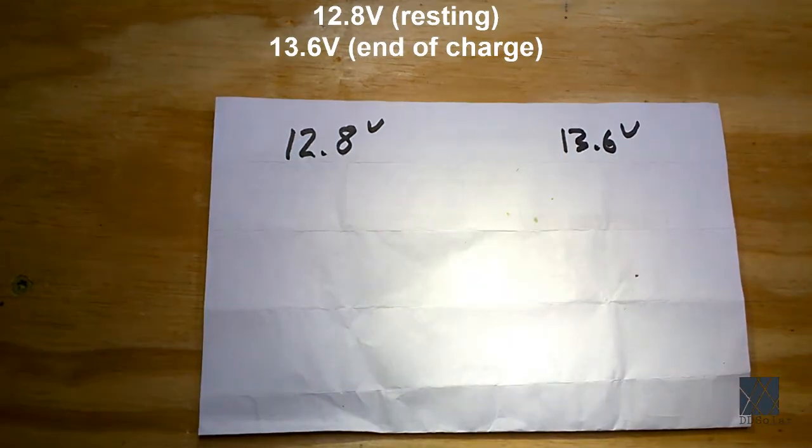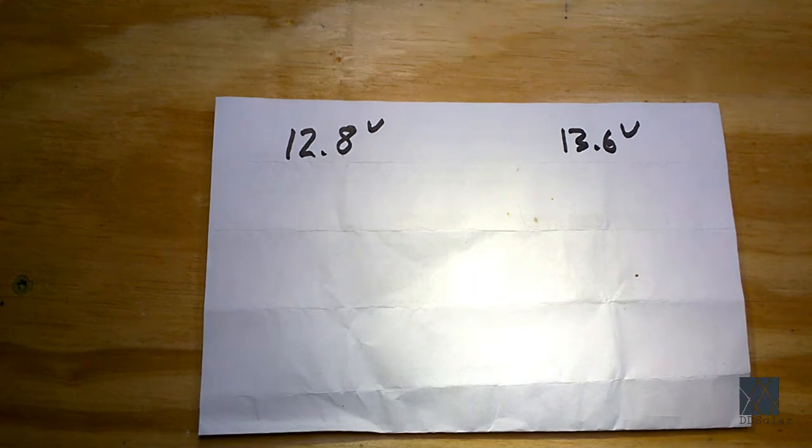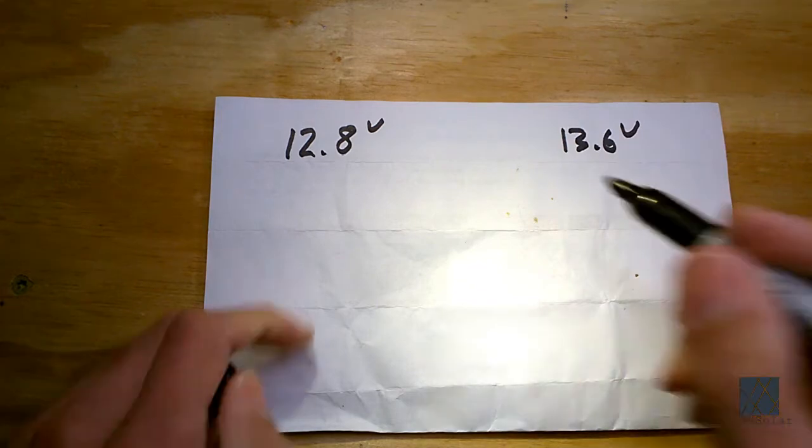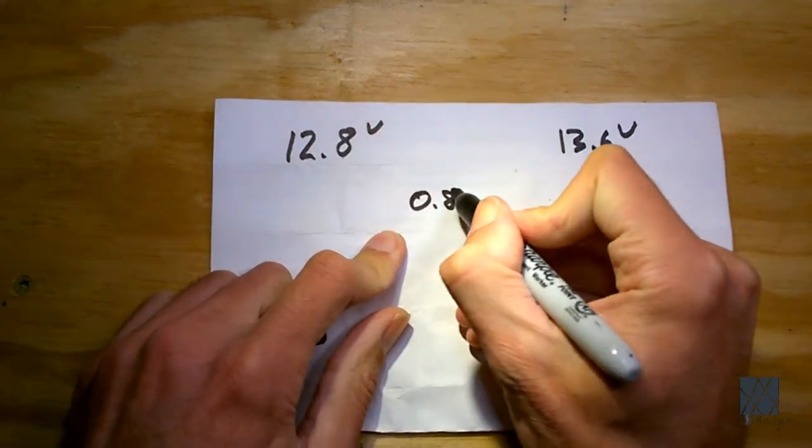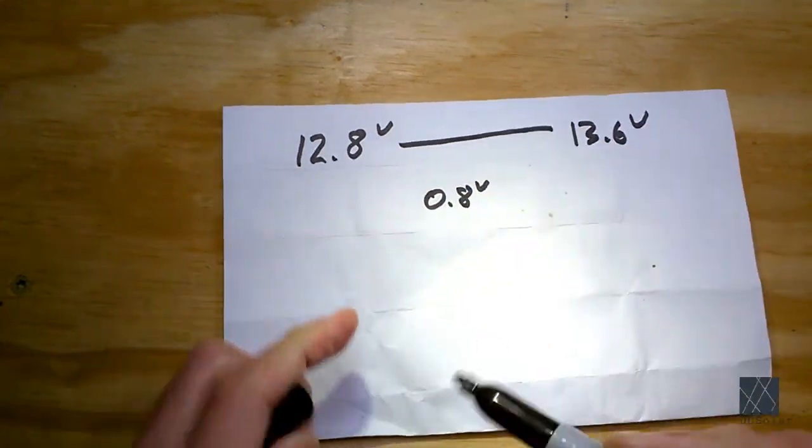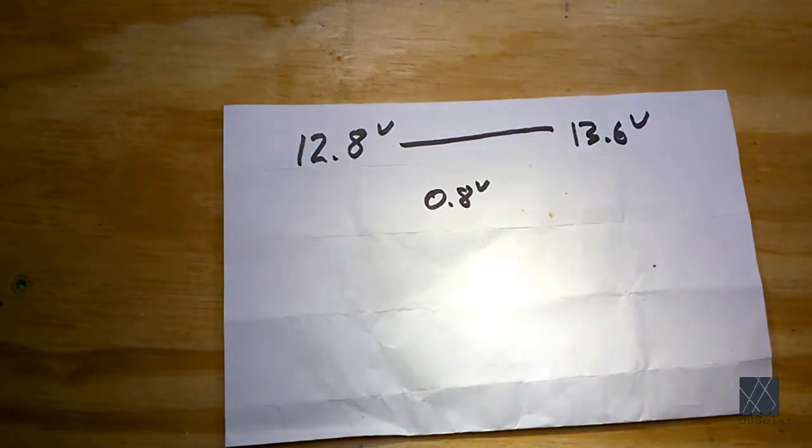That doesn't give me a lot of variation. In fact it's only giving me a total of 0.8 volts between empty and full. 0.8 volts isn't very much.